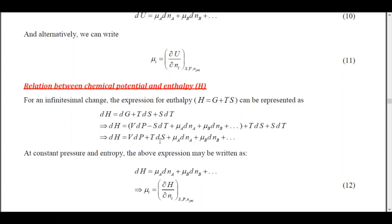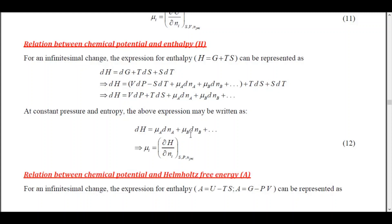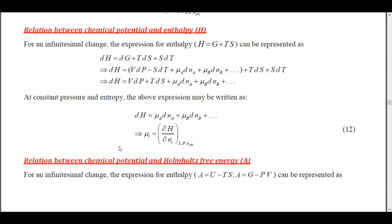The SdT terms cancel out. At constant pressure and constant entropy, the remaining terms reduce to dH = μ_A dn_A + μ_B dn_B. We assume constant pressure and entropy because our aim is to find the relation between enthalpy and chemical potential. Thus, μ_i = (∂H/∂n_i) at constant S, P, and all other moles.